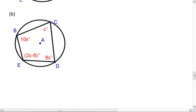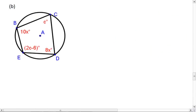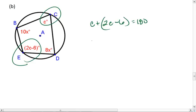Let's try part B. Again, pause the video, resume it when you're ready to check your solution. Here, my opposite angles are E and C. So C plus 2C minus 6 needs to equal 180. This gives me 3C minus 6 equals 180. 3C equals 186. C equals 186 divided by 3, which is 62 degrees.